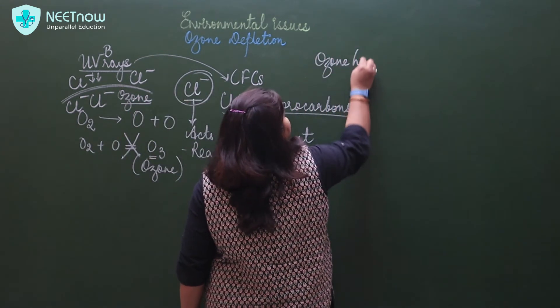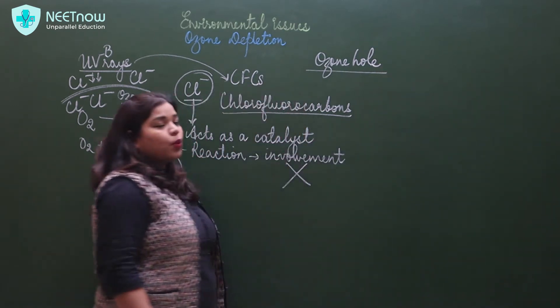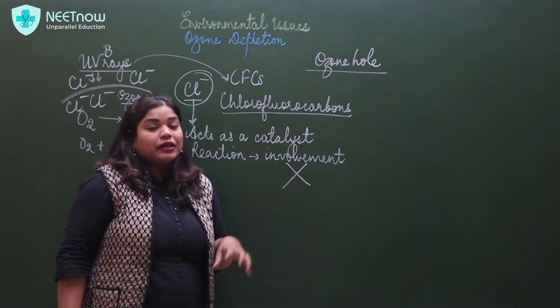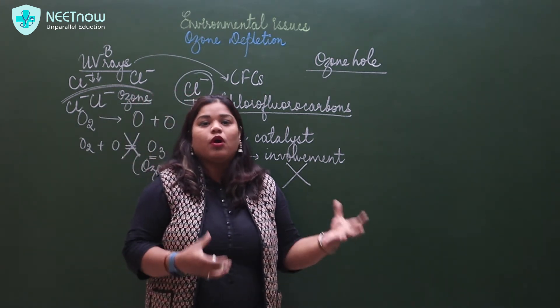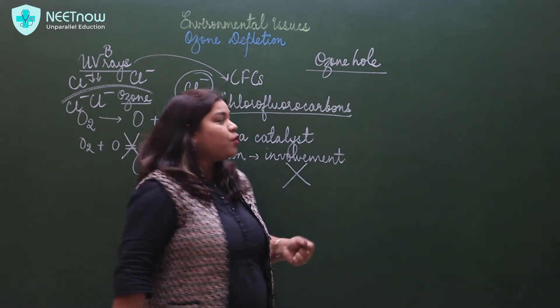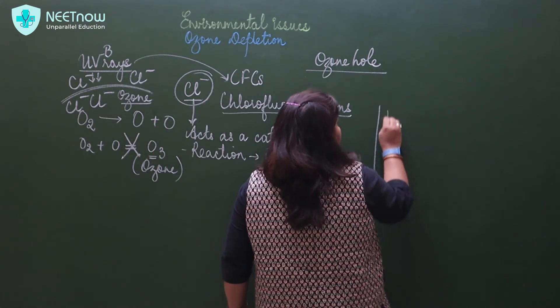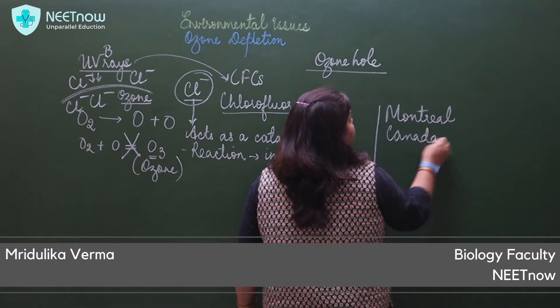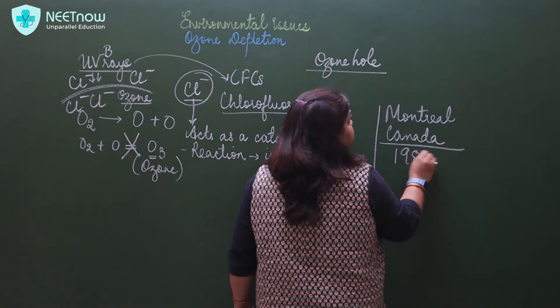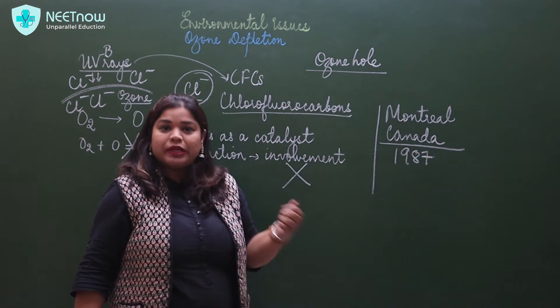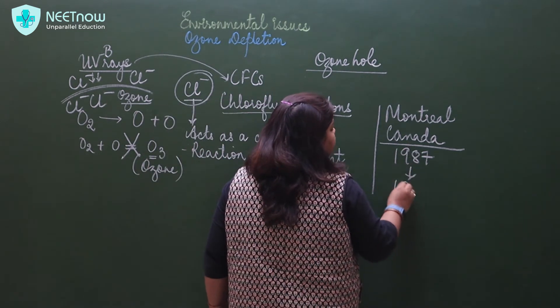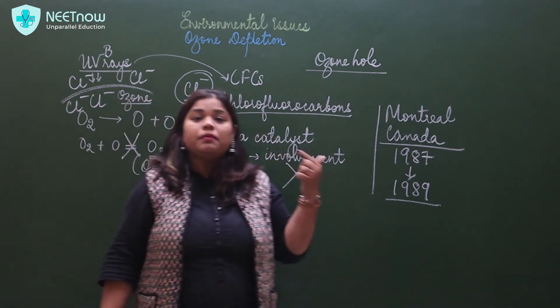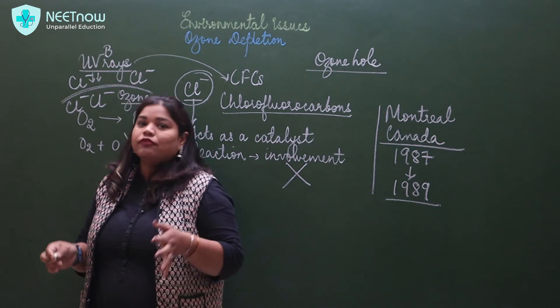There is now an ozone hole through which UV rays enter, causing a lot of harmful effects. Then, in Montreal, Canada, there was a protocol signed that we will address this problem. In 1987 it was signed, and in 1989 it became effective. The ozone hole situation has improved.